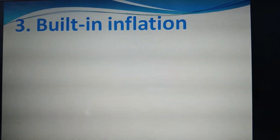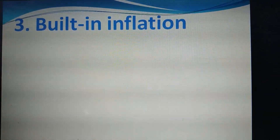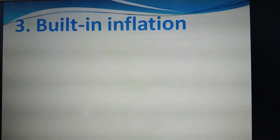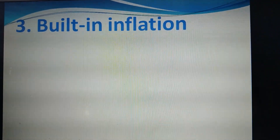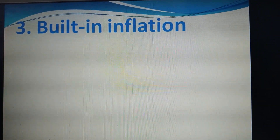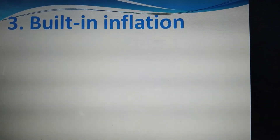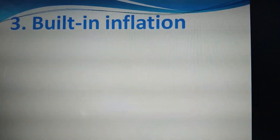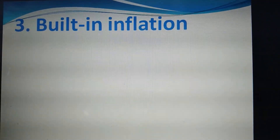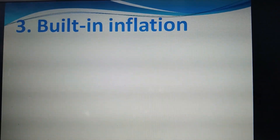The last type is built-in inflation. It relates to the supply side — merchants may hold their products back from supplying to users due to their expectation that inflation rates will rise in the future. To benefit more from the higher inflation rate in the future, the merchant holds existing products, which may further increase the built-in type of inflation.